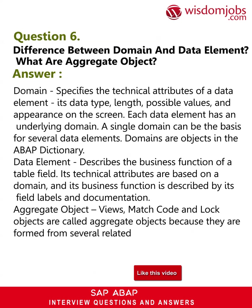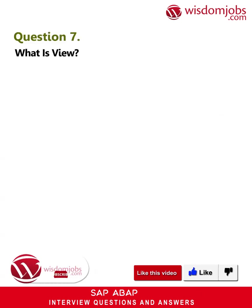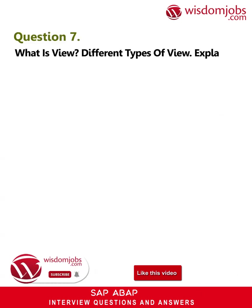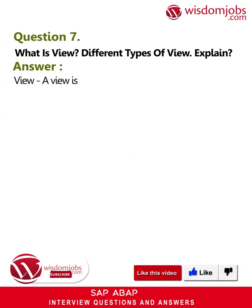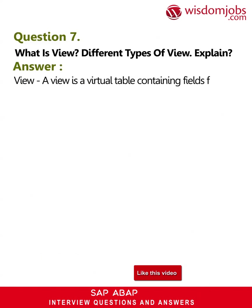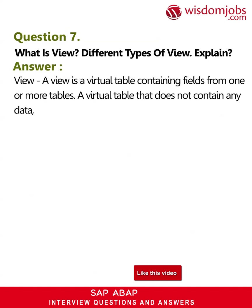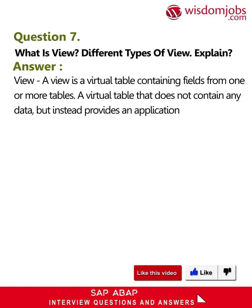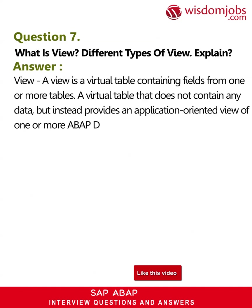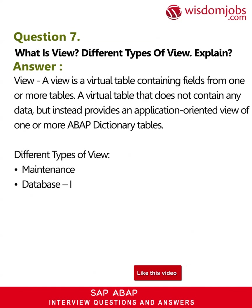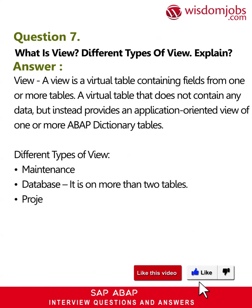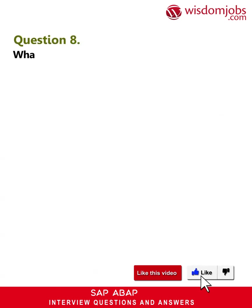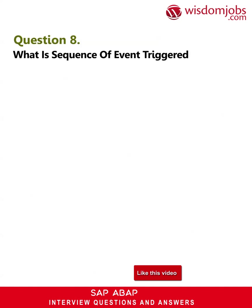Question 7: What is a view and what are the different types of views? Answer: A view is a virtual table containing fields from one or more tables — a virtual table that does not contain any data but provides an application-oriented view of one or more ABAP Dictionary tables. Different types of views: maintenance view (on more than two tables), database view, projection view (only on one table), and help view.